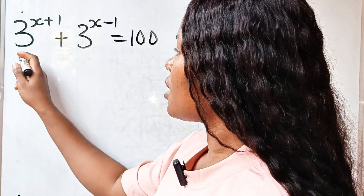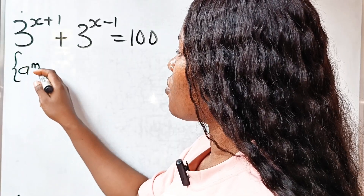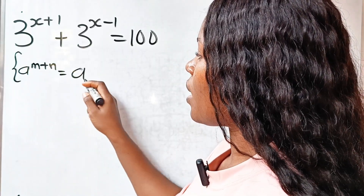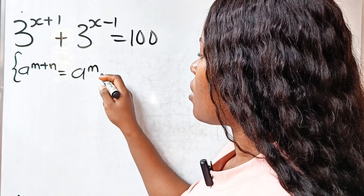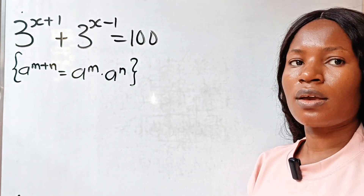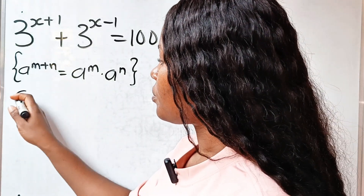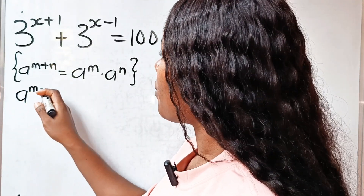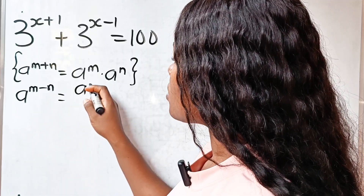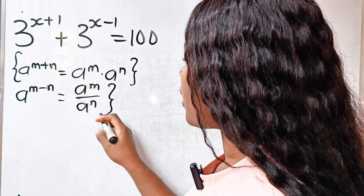We are going to start with two laws of exponents. The first states that a to the power of m plus n is equal to a to the power of m multiplied by a to the power of n. Similarly, a to the power of m minus n is equal to a to the power of m divided by a to the power of n.